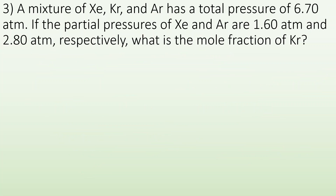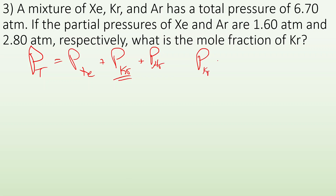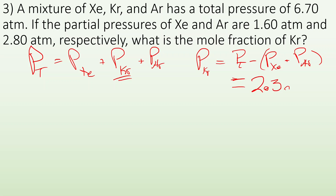Number three: a mixture of xenon, krypton, and argon has a total pressure of 6.7 atmospheres. The partial pressures of xenon and argon are 1.6 atm and 2.8 atm respectively. What is the mole fraction of krypton? The total pressure equals the sum of all partial pressures, so the partial pressure of krypton equals total pressure minus xenon minus argon: 6.7 − 1.6 − 2.8 = 2.3 atmospheres for krypton.